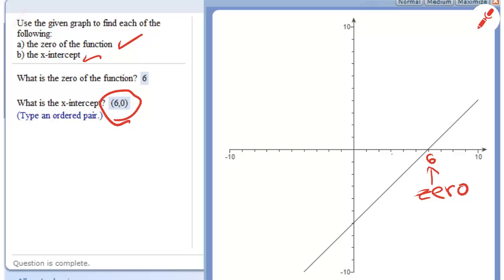So try to get this clear in your mind because we're going to be working with this concept a lot. The 6 is the zero of the function. And (6, 0) - this is the x-intercept.